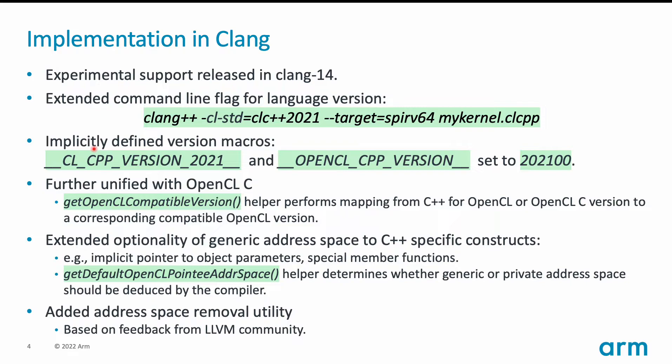Here again we added another helper. That helper introduces a notion of default address space instead of being specific to generic. It switches between generic address space when it is supported and private address space when generic is not supported.